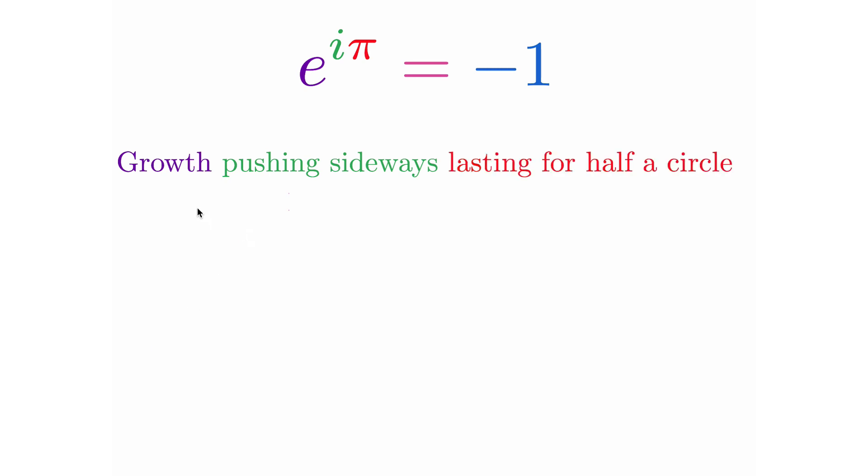And now we say, well, how long do we do this for? And pi is actually halfway around a circle. A unit circle has 2 pi as its full circumference. So a single pi is actually just halfway around the circle. So we have the concept of growth going sideways that is lasting for half a circle. And if we plot it out, it looks like this.